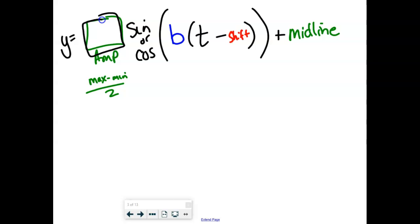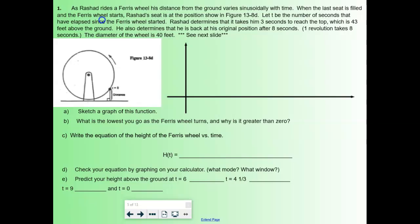Over here you're going to have plus something. This is going to be your midline or your vertical shift. So all of these things are going to be really obvious once we get a really horrible sketch down on our paper. I'm going to try my best. Rashad and his Ferris wheel. Rashad is my kind of dude. He needs to know exactly how high up he is on the Ferris wheel at any given moment.